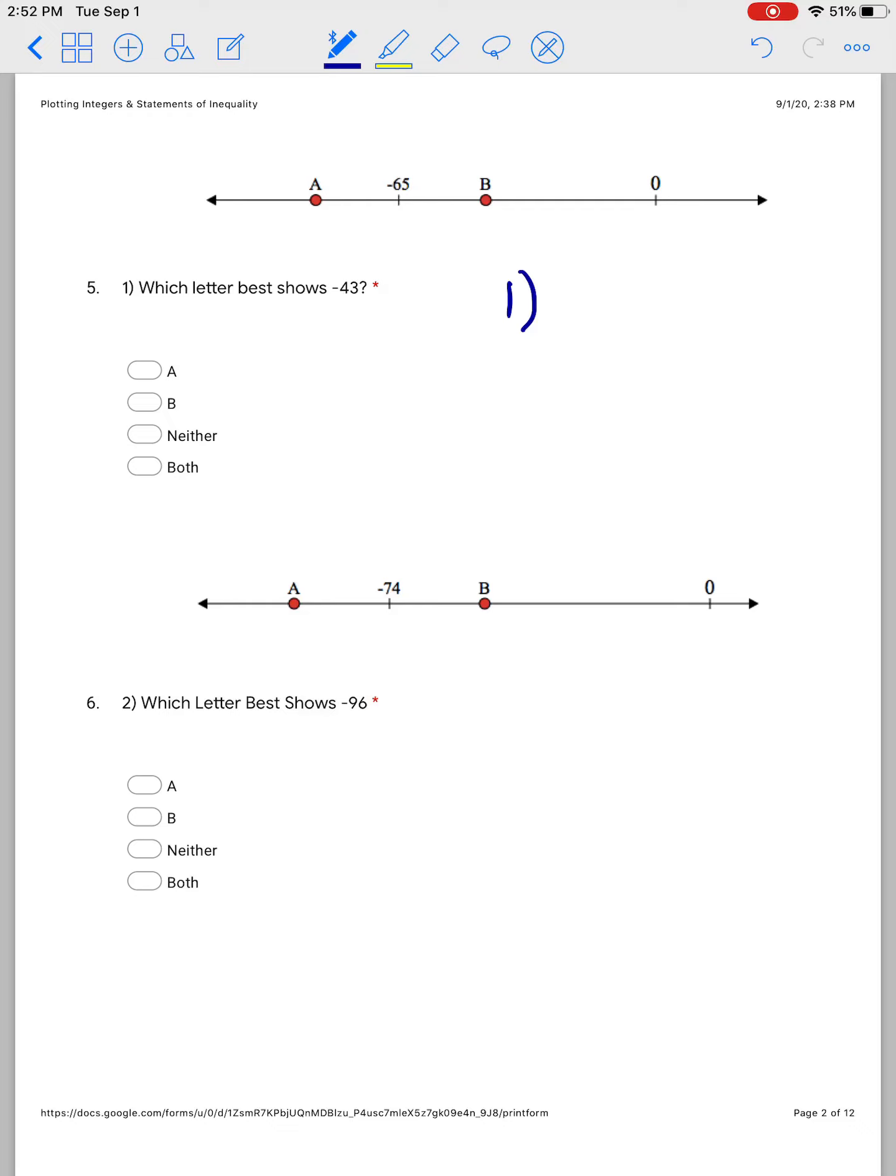On your work paper, you'll just have to say, it says which letter best shows negative 43? Well, B best shows negative 43. So on number 1, I'm just going to write the letter B. For number 2, which letter best shows negative 96? It might be A. So for number 2, I would just write A.